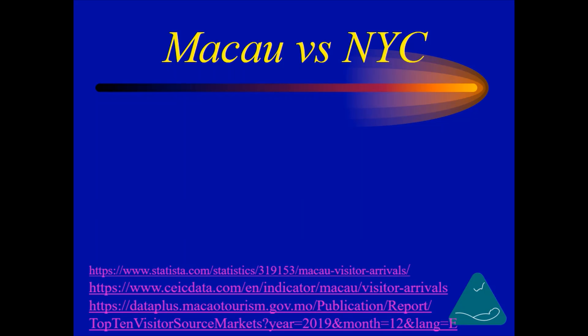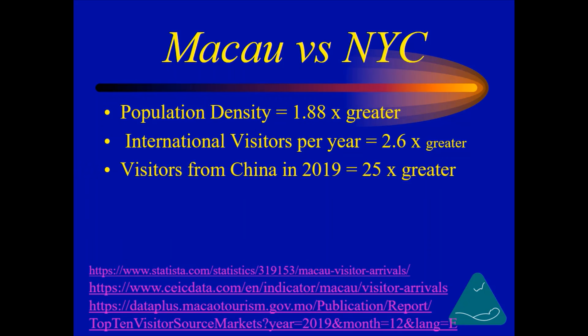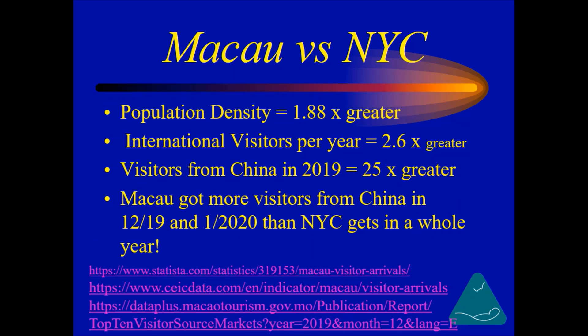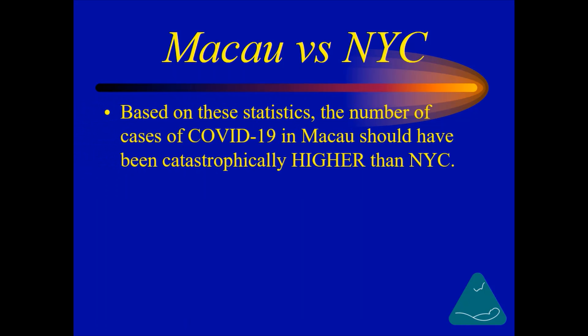Let's see how these parameters compare between Macau and New York City. First of all, the population density of Macau is 1.88 times greater. The number of international visitors per year is 2.6 times greater. Visitors from China in 2019 were 25 times greater than New York City. Macau got more visitors from China in the first two months from the start of the pandemic than New York City gets in a whole year. The magnitude of the differences in these risk factors for pandemic severity are not trivial — they are massive. Therefore, based on these statistics, the number of cases of COVID-19 in Macau should have been catastrophically higher than New York City.